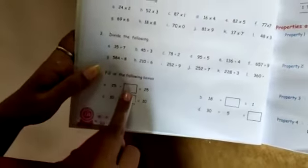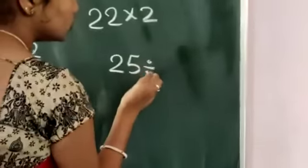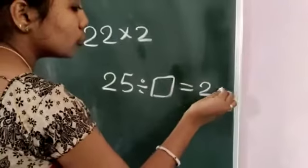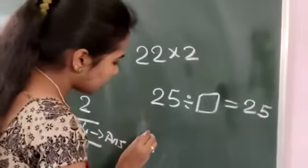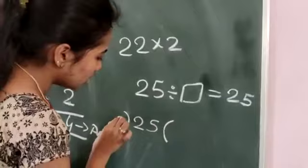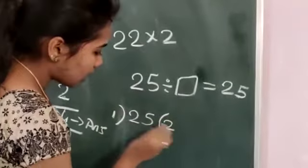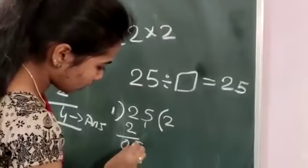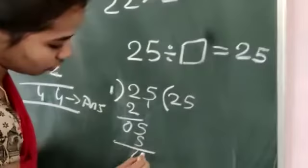Like that only, you have some division problems here. Filling in the blanks. Here they have given some answers. You have to see: 25 divided by blank equals 25. You have to fill here. 25 ones are 25. Like that only, till here you have to solve the problems in your textbook.